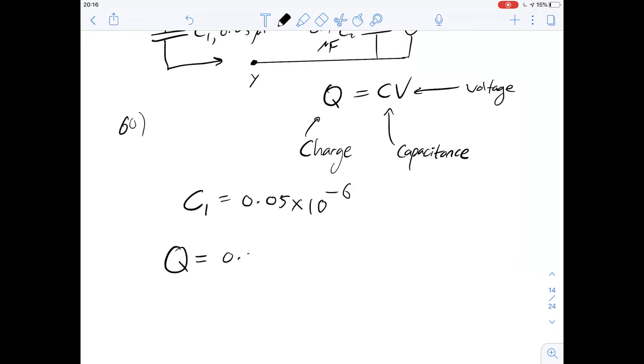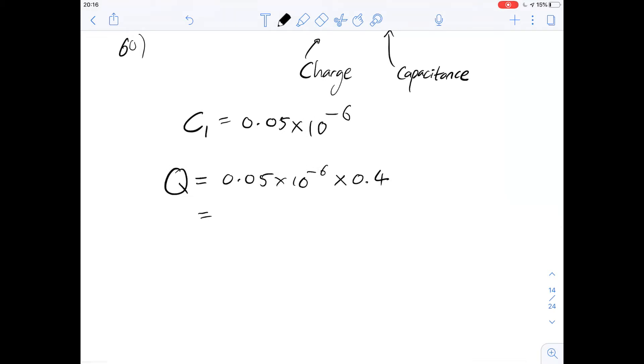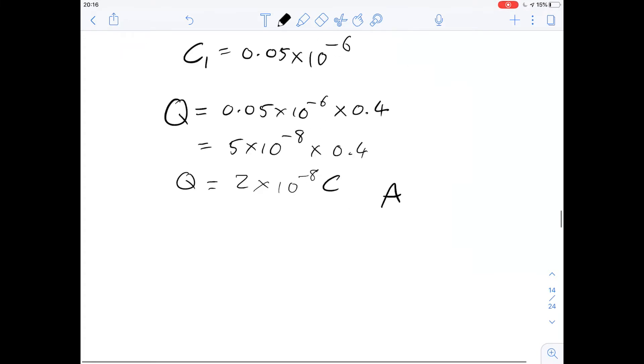So Q is going to be 0.05 times 10 to the minus 6 multiplied by the voltage. And we're told that the voltage here is going to be 0.4 because that's the battery that was used. So multiply by 0.4. Another way we can think of 0.05 times 10 to the minus 6 is 5 times 10 to the minus 8. Multiplying that by 0.4 means we can get 2 times 10 to the minus 8 Coulombs as our answer for the charge on that capacitor. That gives us answer A.